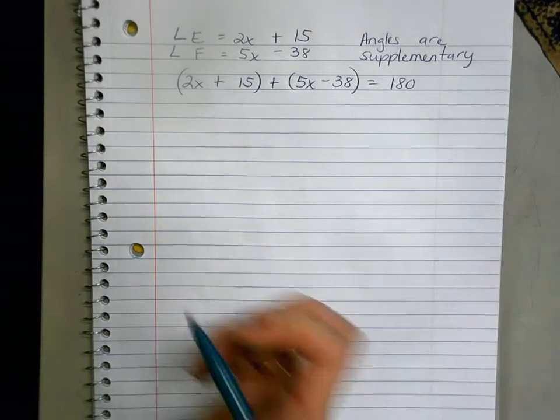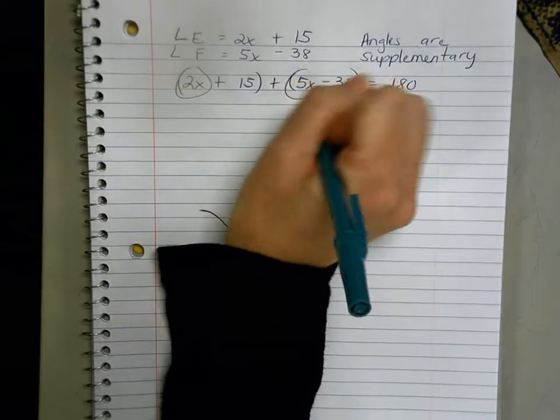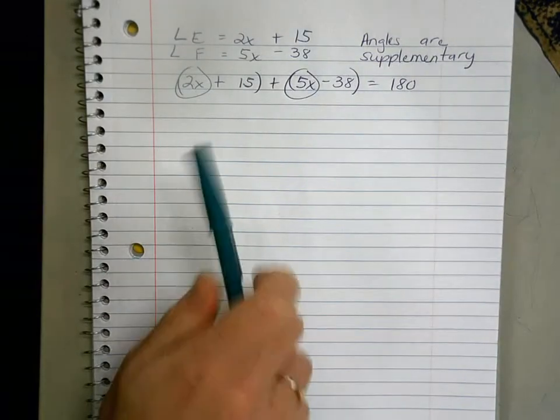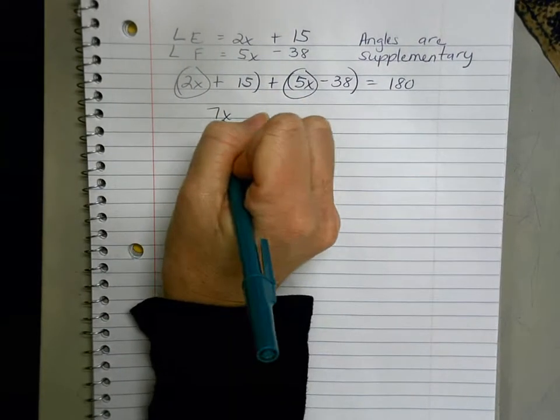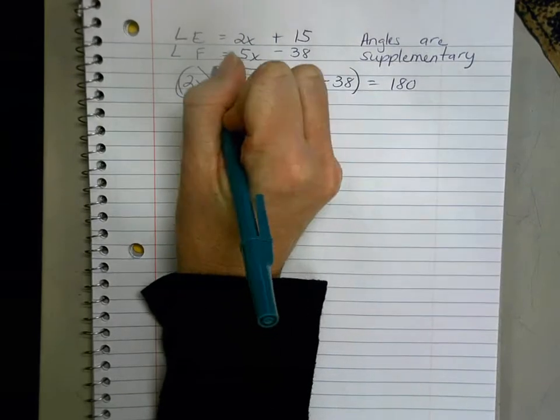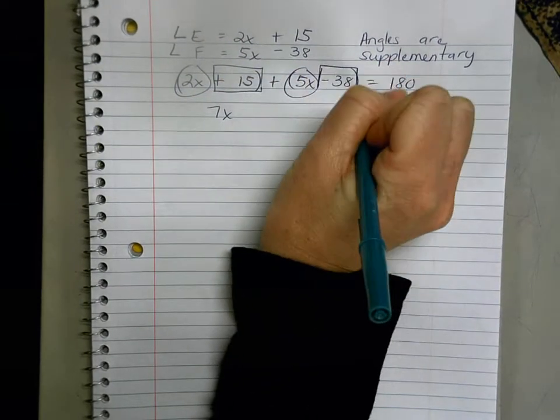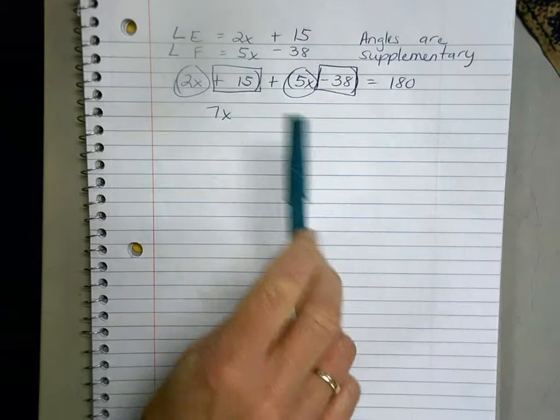And then from here we're gonna combine like terms, and most students are doing excellent in this first step. 5x and 2x is 7x. Here we have positive 15 minus 38, so again you want to look at the term as well as the symbol in front of it.